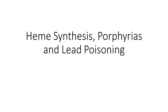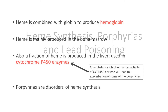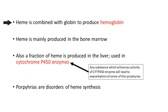Welcome to our lecture on heme synthesis and its related disorders. Heme is a component of hemoglobin — hemoglobin is formed when heme and a protein called globin combine together, and the main function of hemoglobin is to carry oxygen in red blood cells.